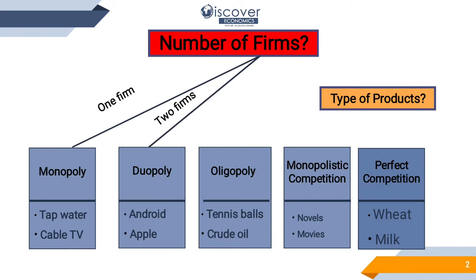Then we have another type, that is duopoly. Duopoly means two firms working together — two firms having the main share of the market in terms of supply. The examples are Android and Apple phones, which have complete control over the market supplies. This is why we call it duopoly.